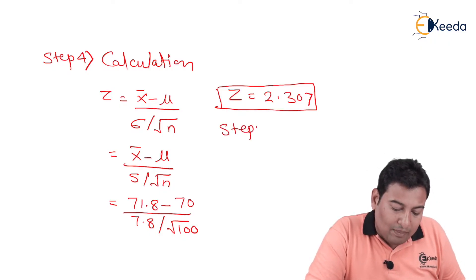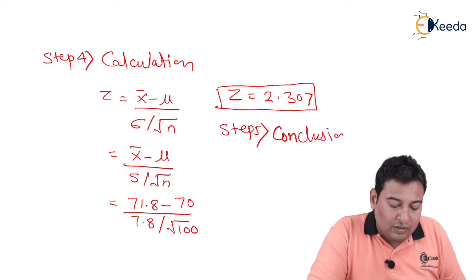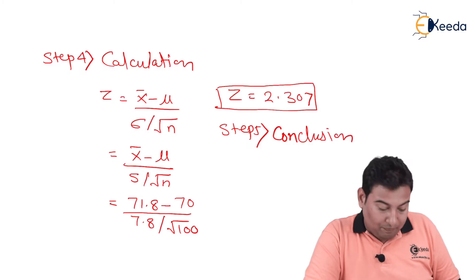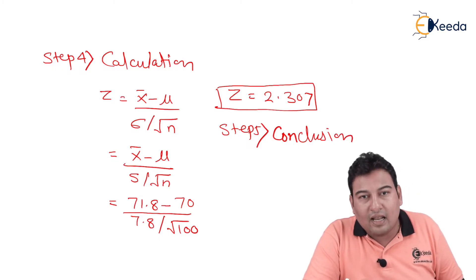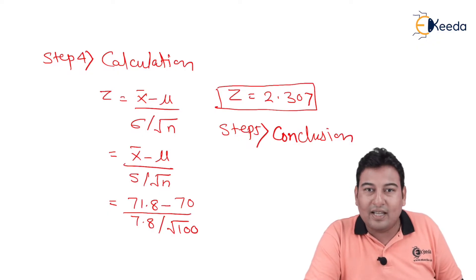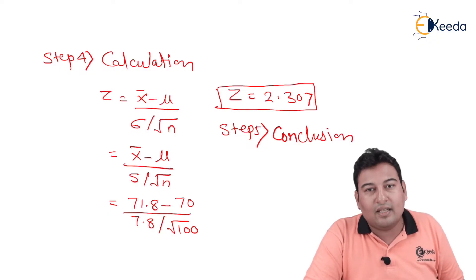Let's move on to the last step, that is step number 5, and that is your conclusion part. So this step is very important, in which we have already discussed if |Z| less than Zα, accept NH, reject AH, and if |Z| greater than Zα, reject NH and accept AH.